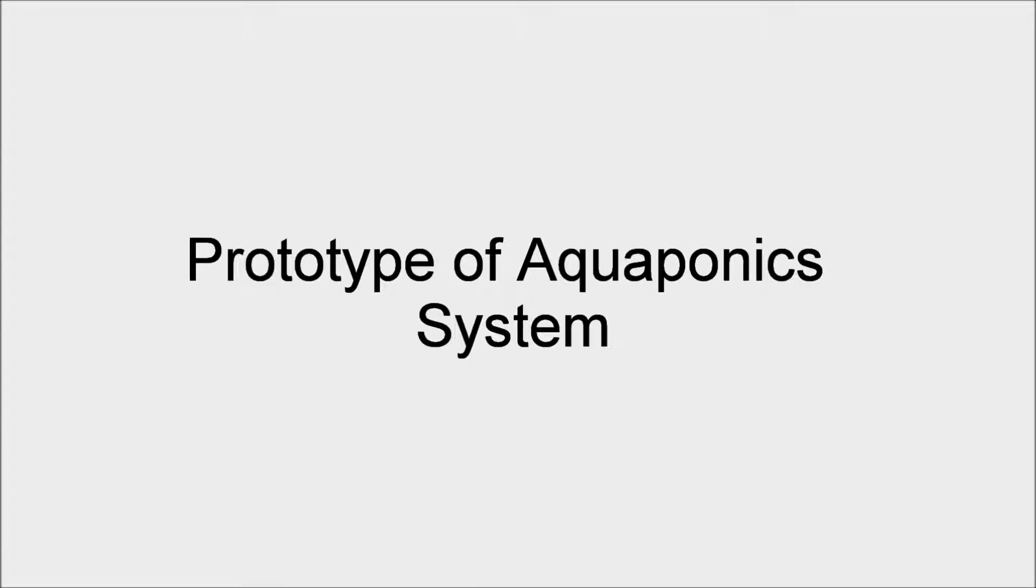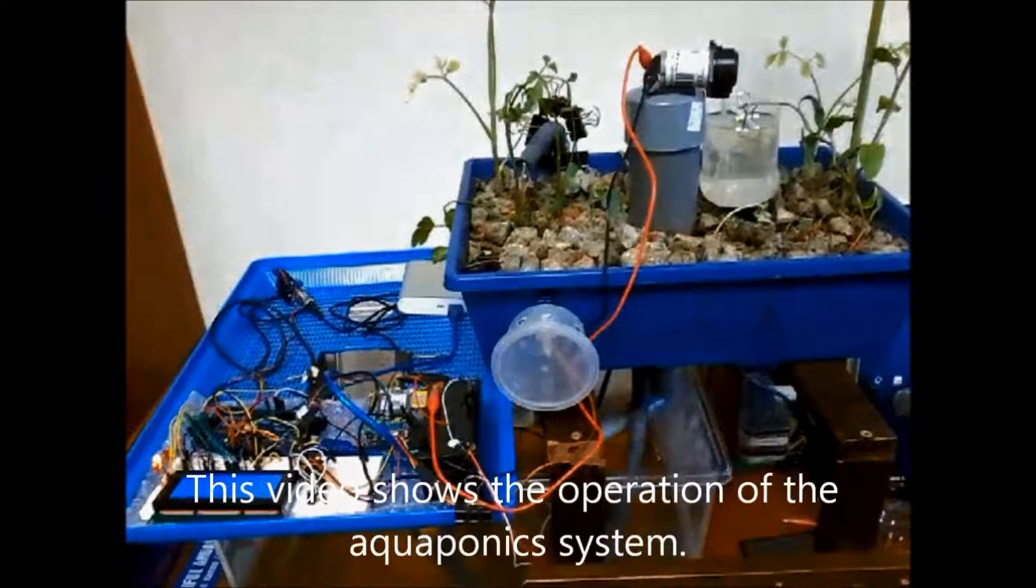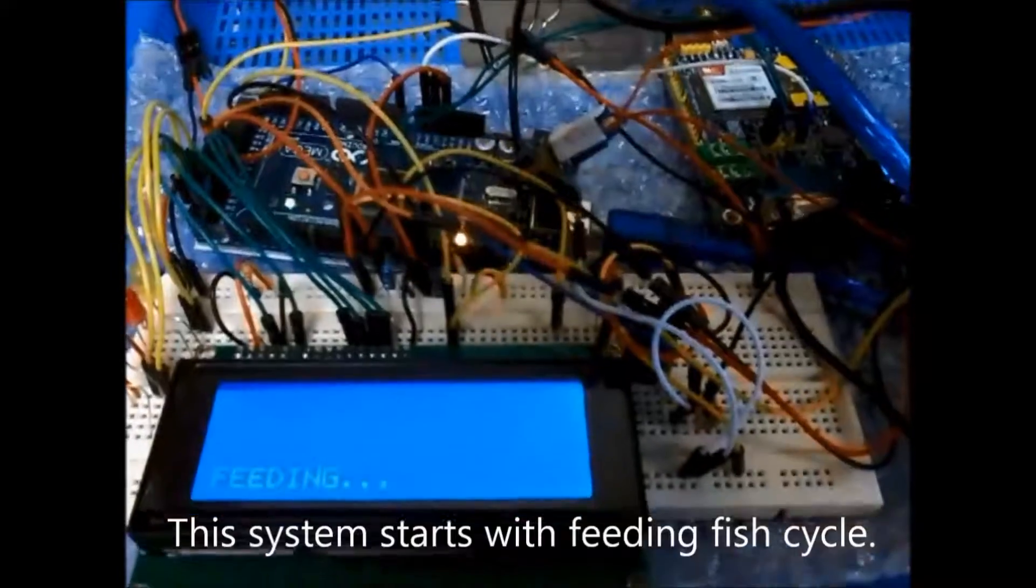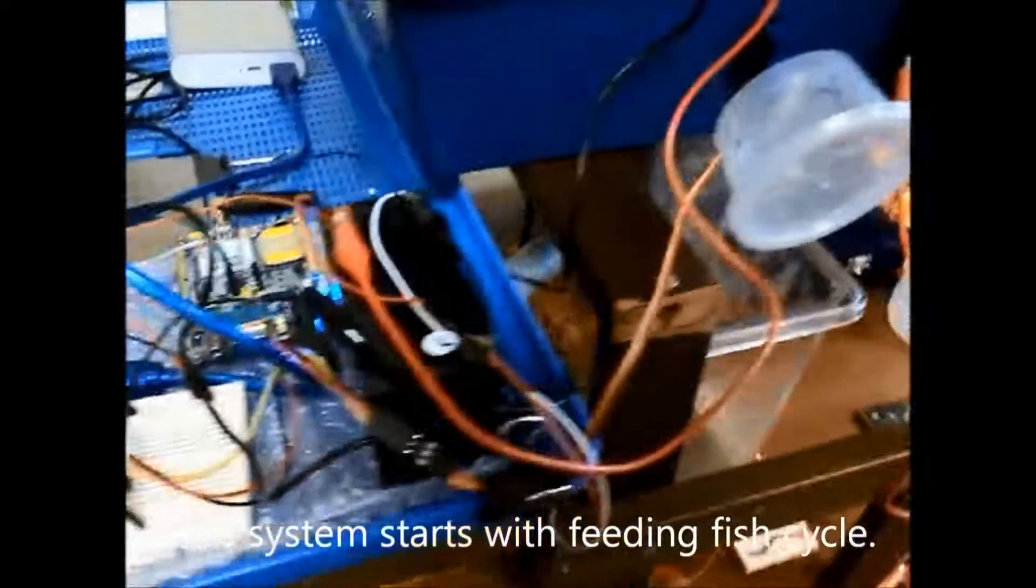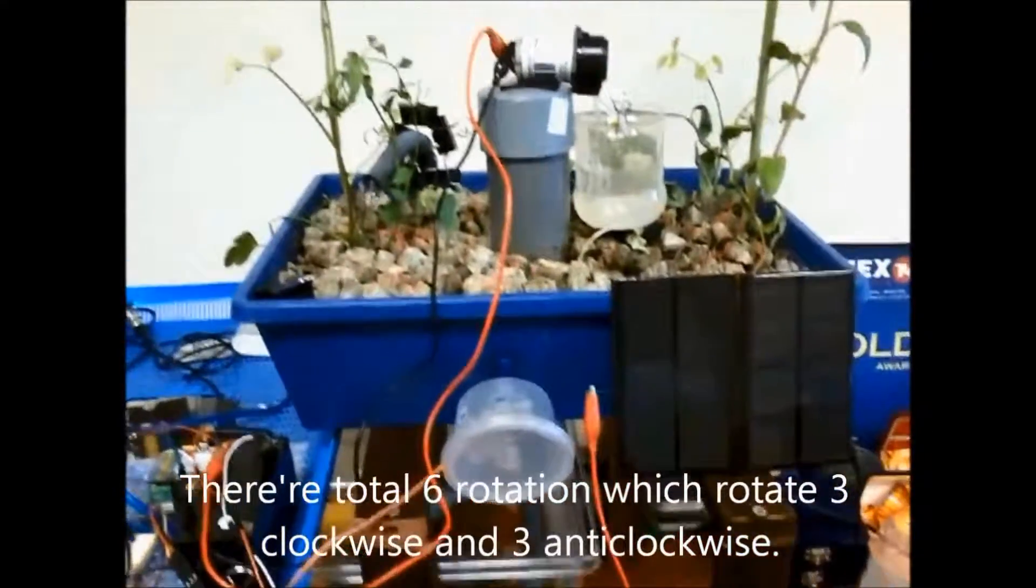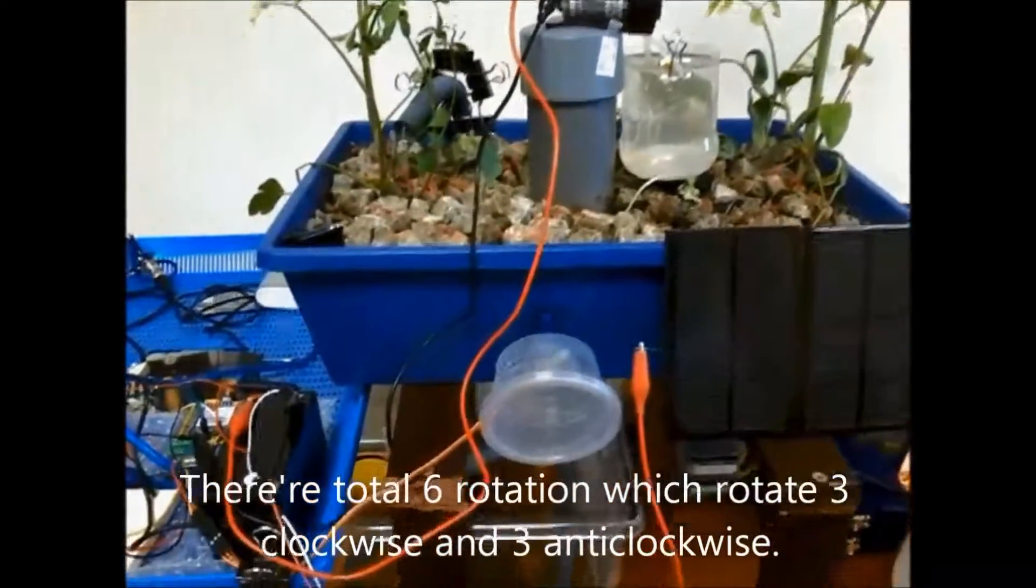Next, it will show how to monitor and control the aquaponics system. This video shows the operation of the aquaponics system. This system started with the feeding fish cycle. There are total six rotations, which rotate three clockwise and three anti-clockwise.